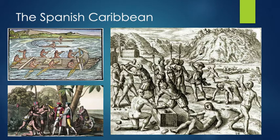The landowners from Spain became known as encomenderos. In these encomiendas, they essentially exploited the natives to work for them. The Tainos rebelled, but their rebellion with bows and arrows didn't compare to the weapons the Europeans brought with them.